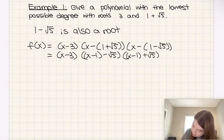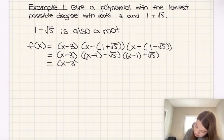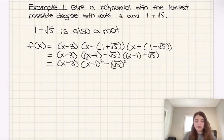Just because that way it'll be a little bit easier for us to expand. We can treat this as we would our difference of squares. So we're going to end up with x minus 3 times x minus 1 squared minus root 5 squared. We can ignore the middle terms because those terms will just cancel each other out as in all difference of squares.